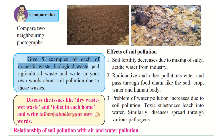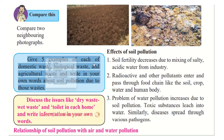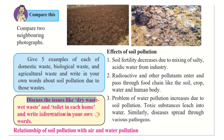Give five examples each of domestic waste, biological waste, and agricultural waste, and write about soil pollution due to these wastes in your own words. Make three columns for the three types. Domestic waste is waste created in our homes, biological waste is from nature, and agricultural waste is from farming. To check your answers, visit our website at www.jkacademypro.com.